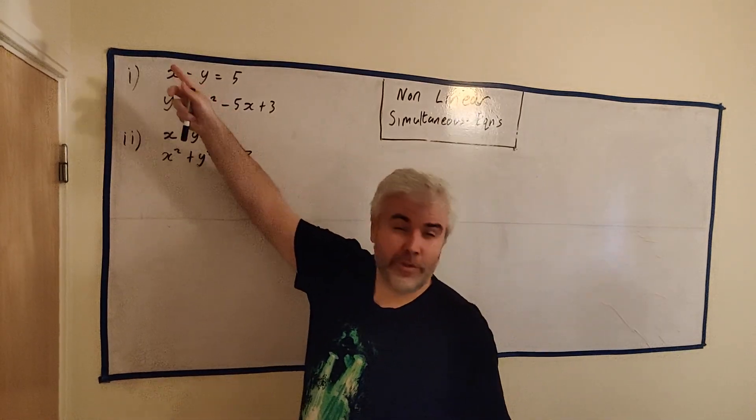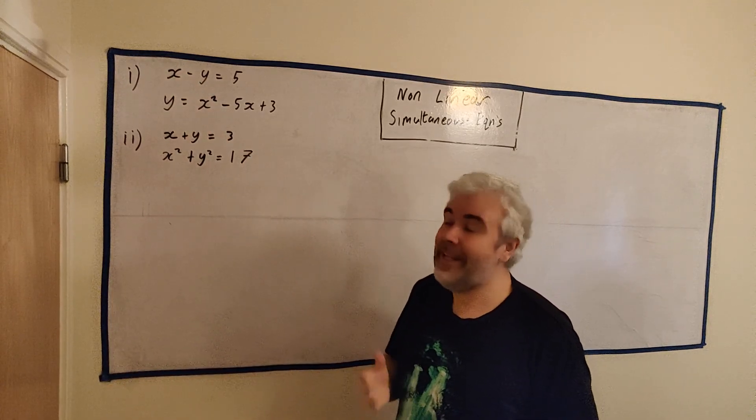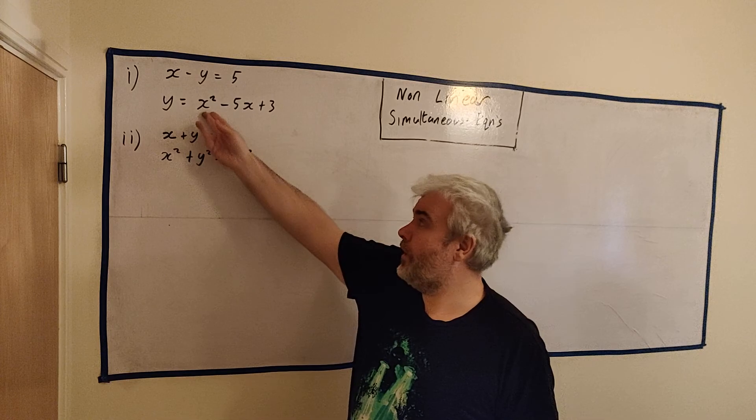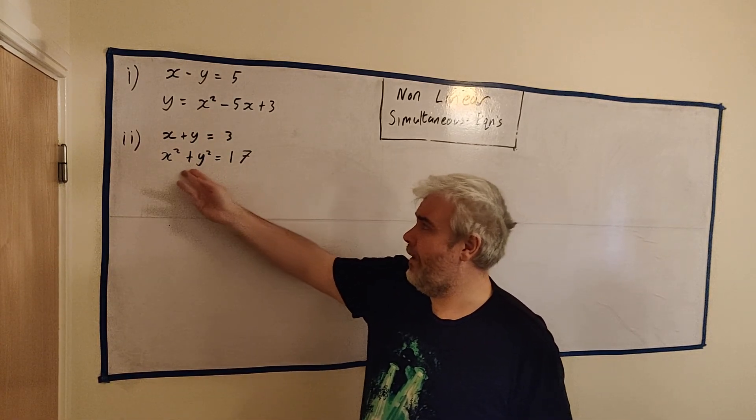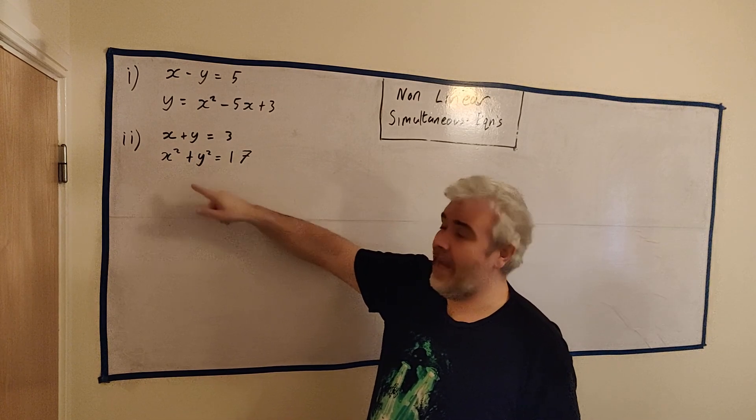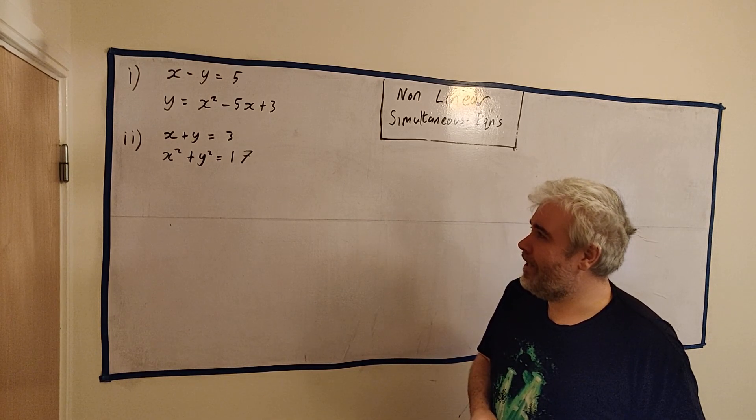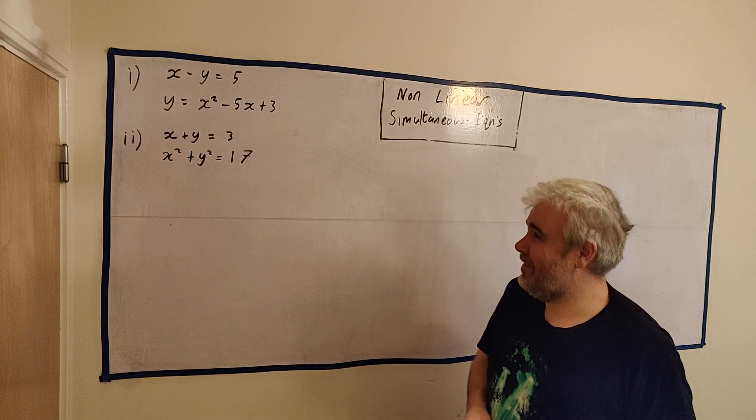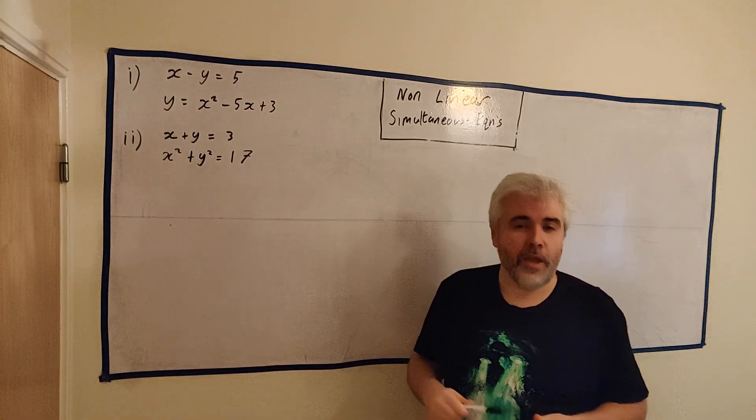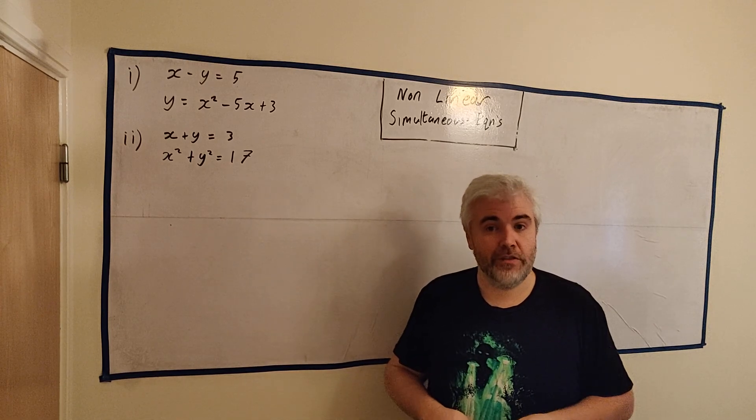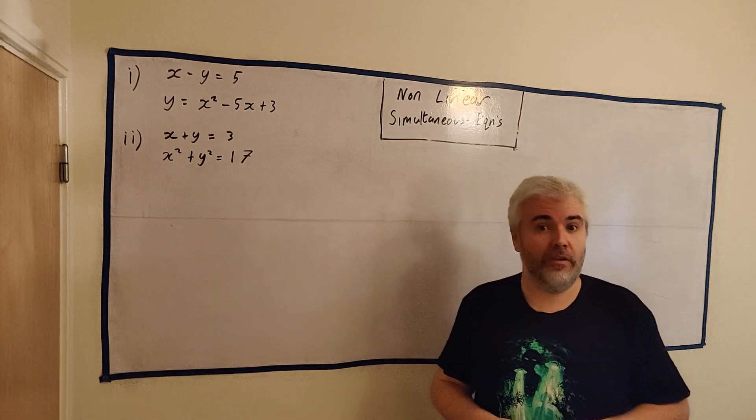But what they should really be called is linear simultaneous equations. All linear means is no squared, no power. The x, usually we just look at the x, the x is to the power of 1. There is a linear x, that's what we call it. So when there's an x squared, we call it a quadratic x.